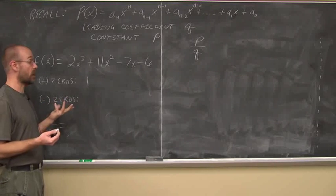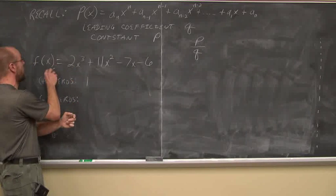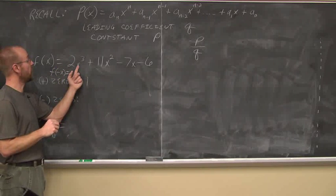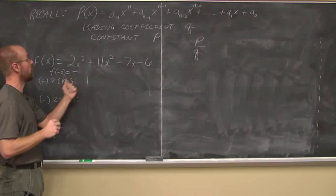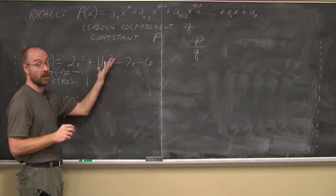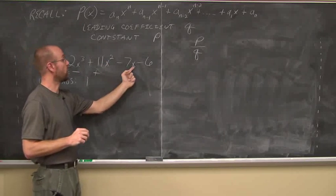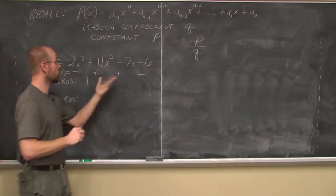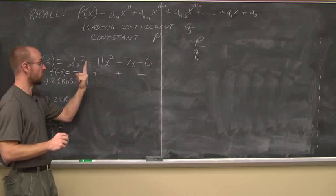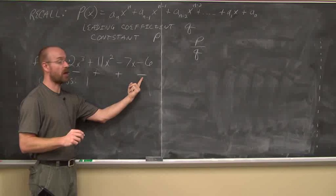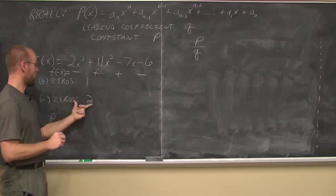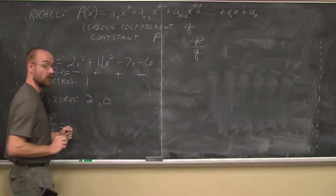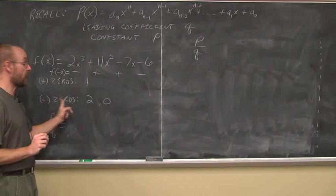How many negative real zeros can I have? Let's evaluate f(-x) — I really only care about the signs. If I put in a negative, the x³ term changes sign to negative. For x², squaring a negative doesn't change the sign — it remains positive. For the x term, a negative times a negative gives positive. That last constant doesn't change. Looking at the signs: negative changes to positive — that's one sign change. It changes back to negative — that's two sign changes. So there are either 2 or 0 negative real zeros.